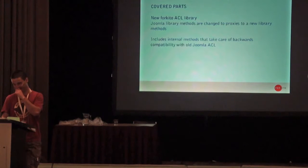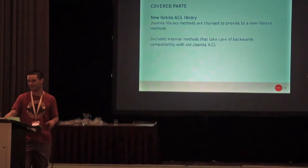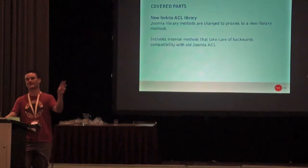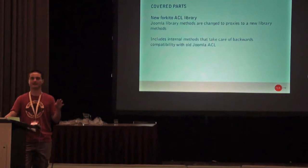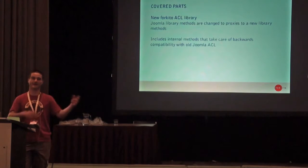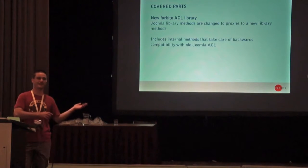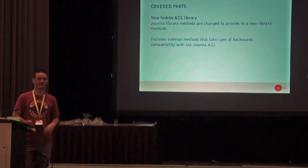What I've made is a new ForKeto ACL library — completely new classes — and then Joomla library methods are made as proxies to those methods. It includes a few internal methods that take care of compatibility between view access levels and this system.